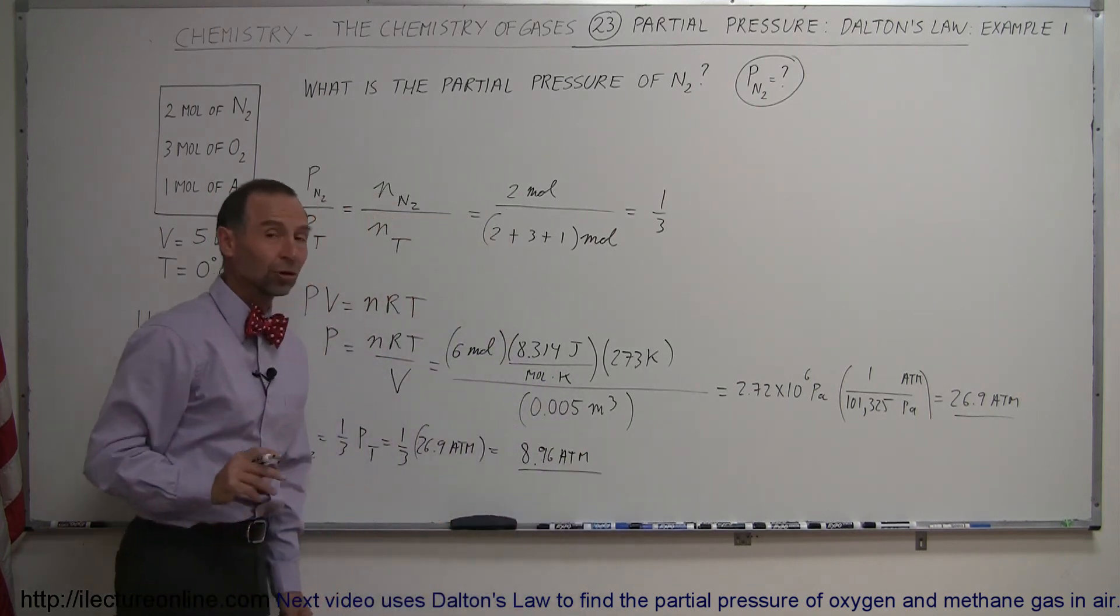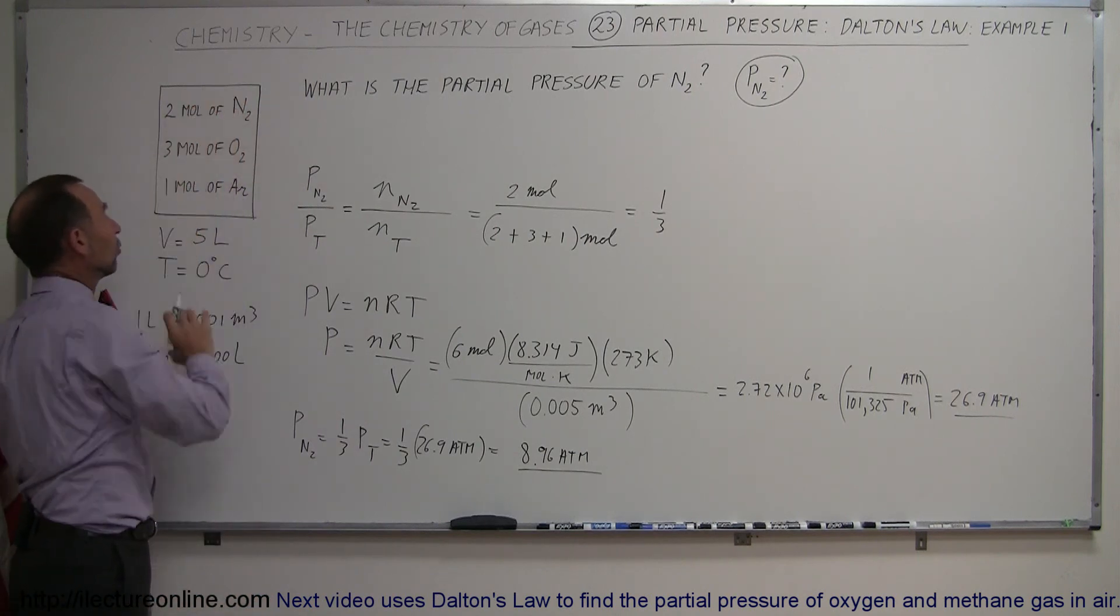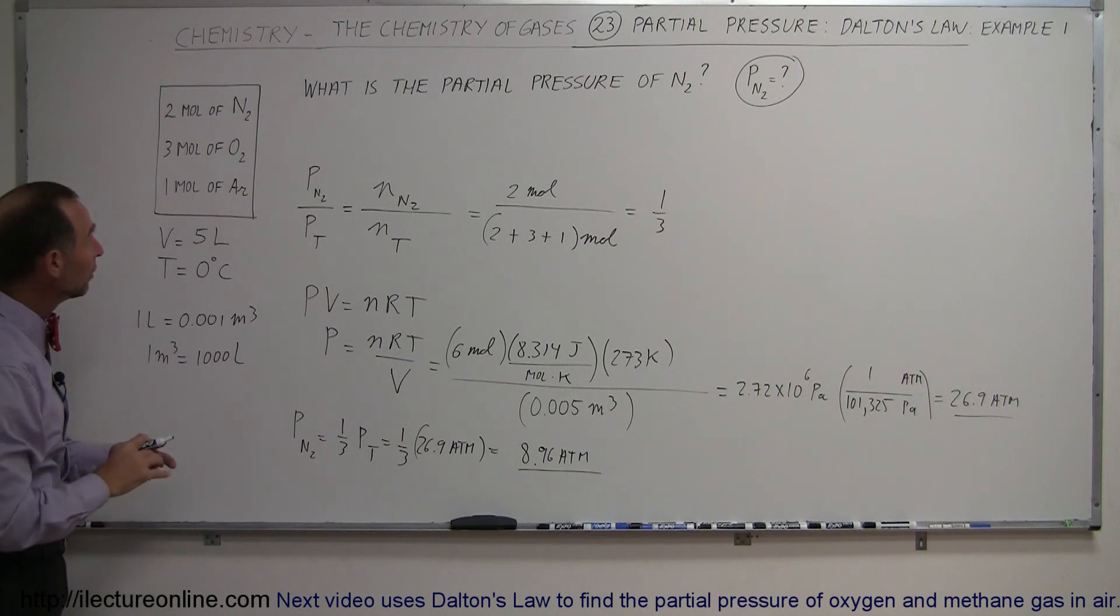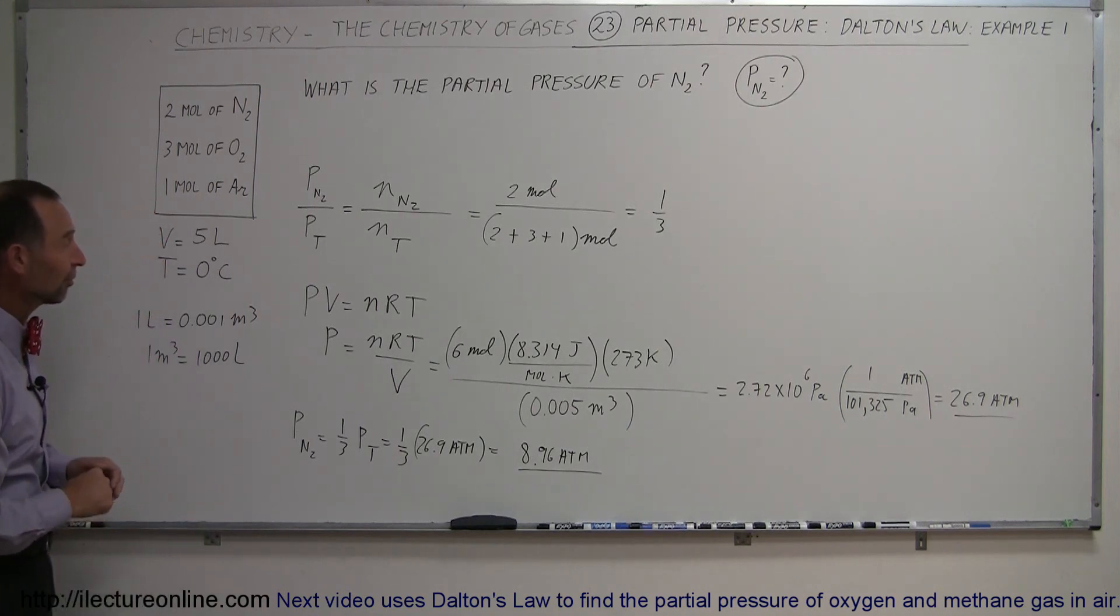So, the pressure contributed by the nitrogen gas in this mixture, since it's one-third of the total in moles or in number of molecules, would be one-third the total pressure, or 8.96 atmospheres. And that's how you calculate the partial pressure caused by any constituent of a gas in a mixture of gases.